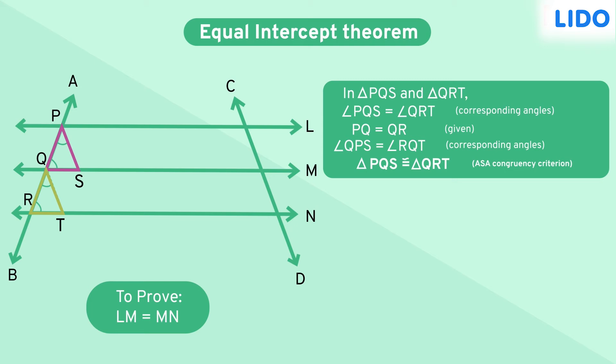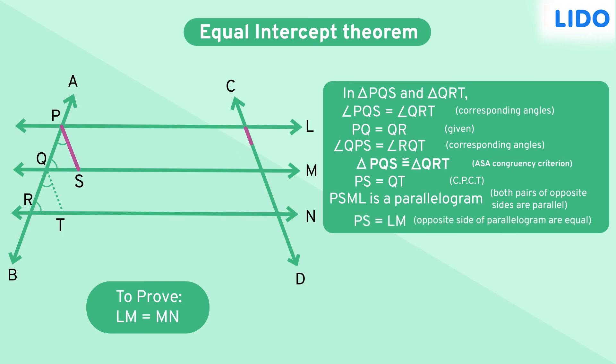Now, since triangle PQS and triangle QRT are congruent, its corresponding sides PS and QT are also equal. With sides PS and QT, the opposite sides of PSML being equal, quadrilateral PSML becomes a parallelogram. This makes opposite sides PS and LM equal.